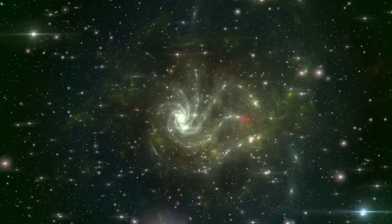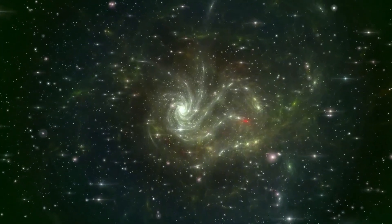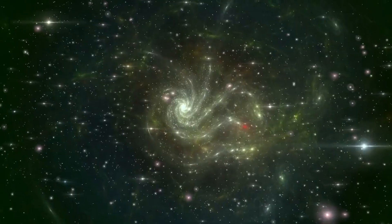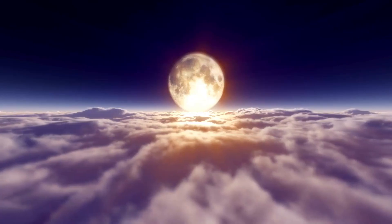Additionally, Proxima b's proximity to its host star, Proxima Centauri, is strikingly close, just 7.3 million kilometers away. This distance is under 5% of the vast expanse that separates Earth from the Sun, contributing to various extreme conditions on the planet.